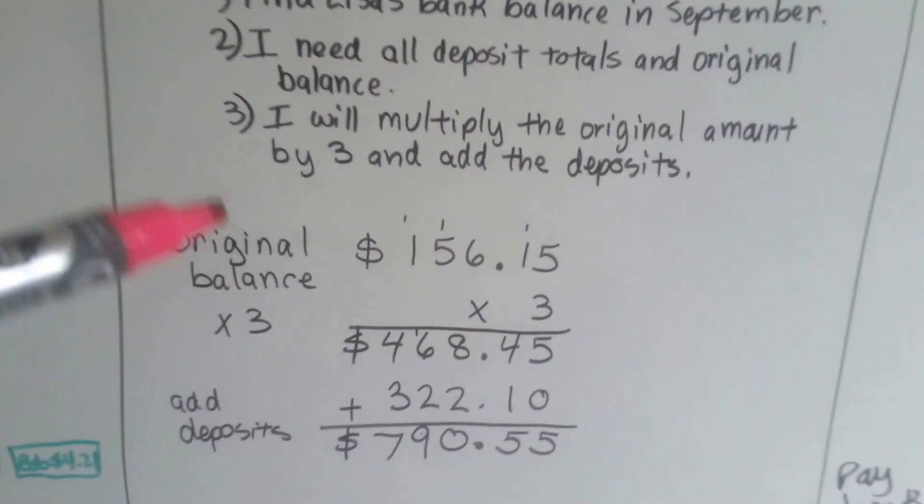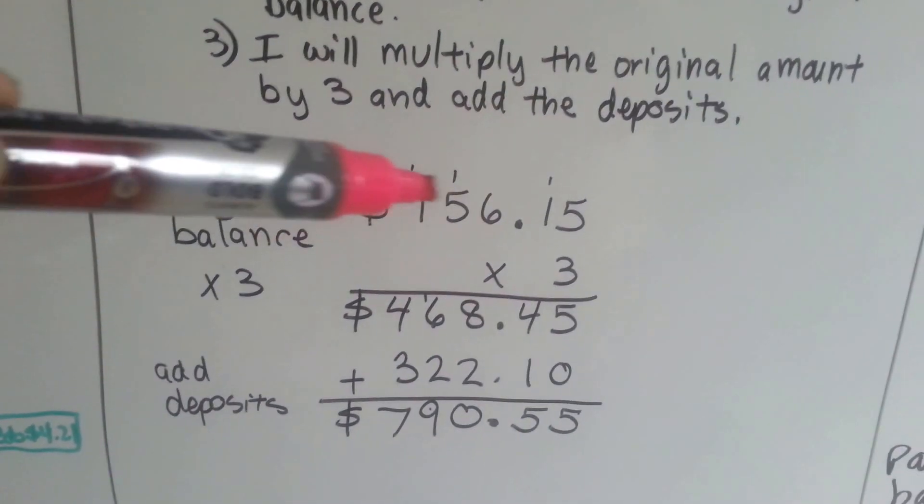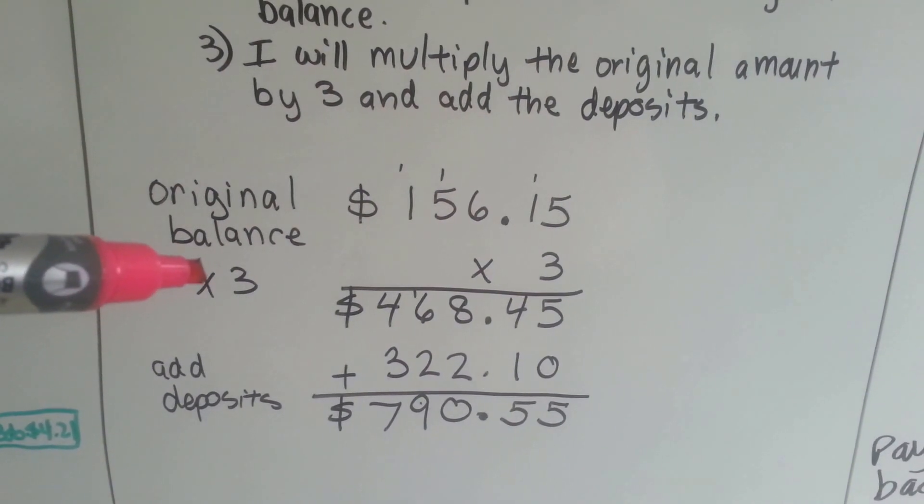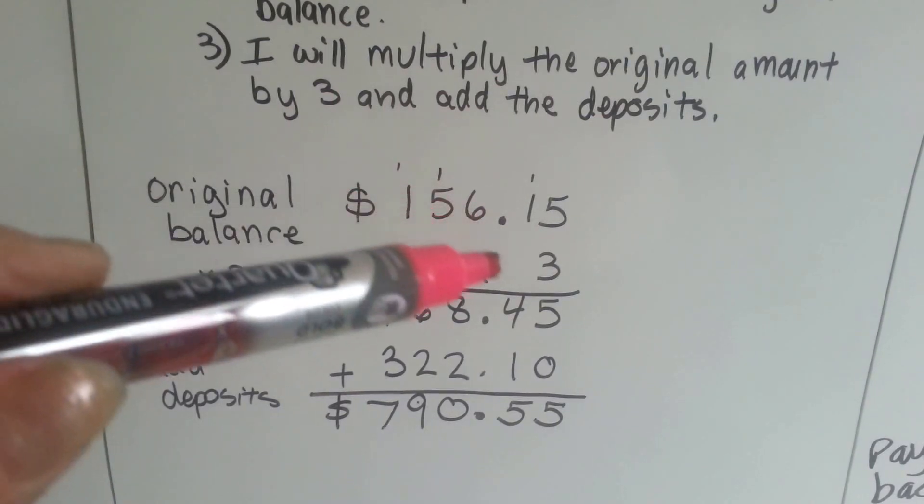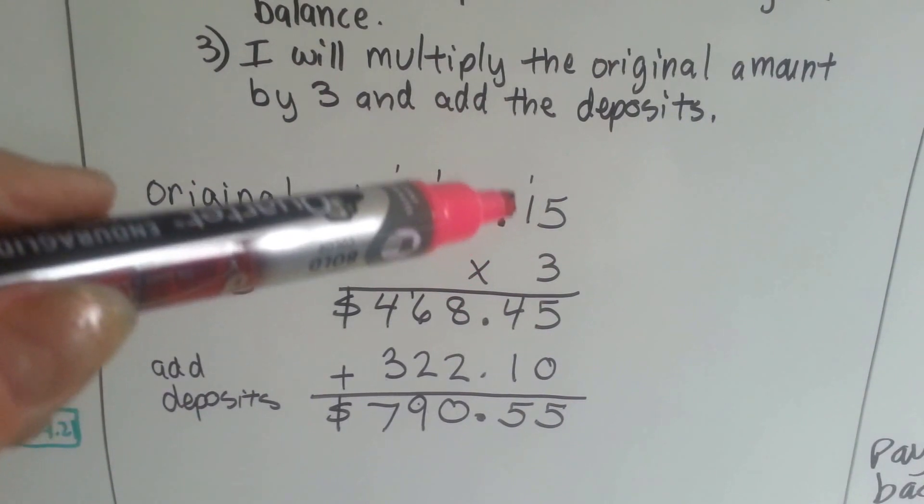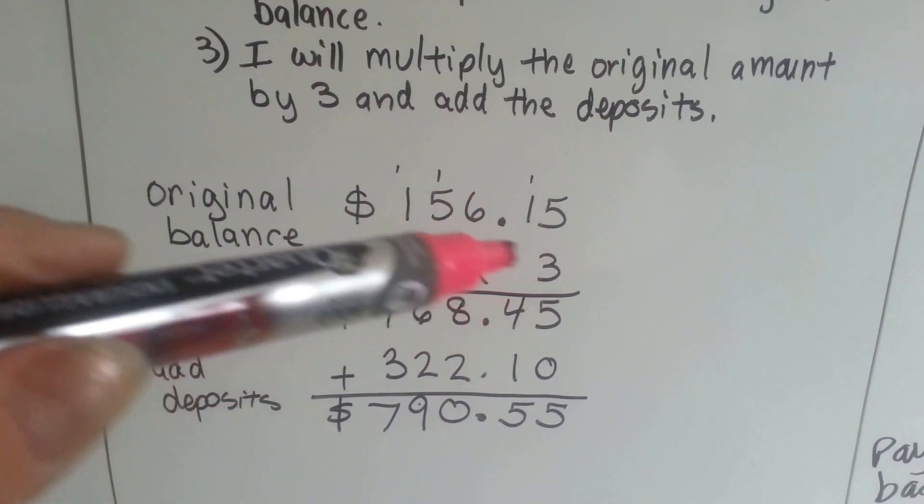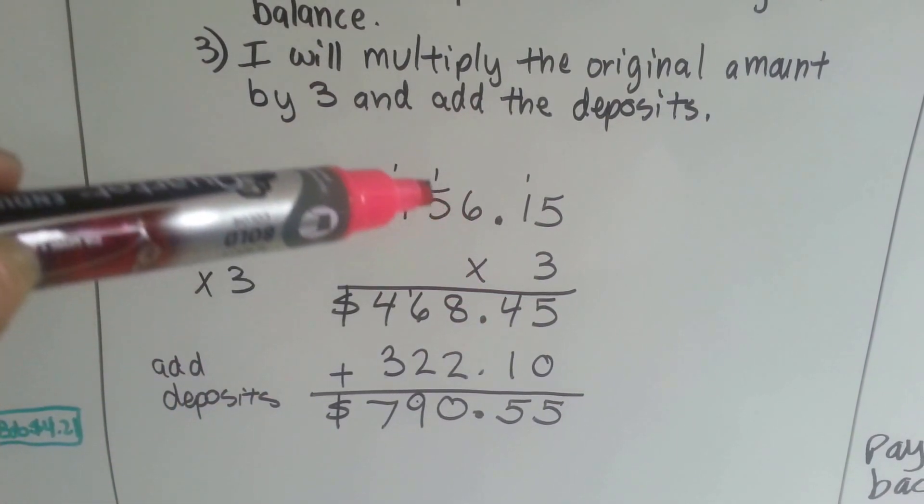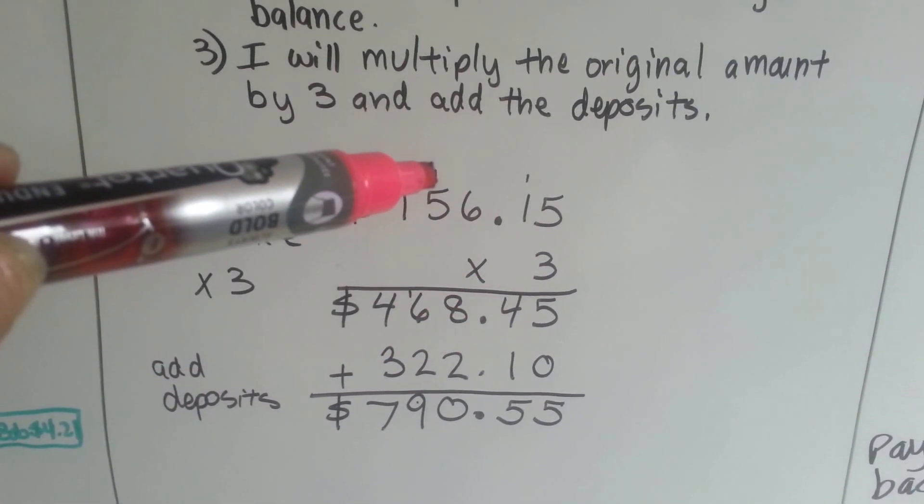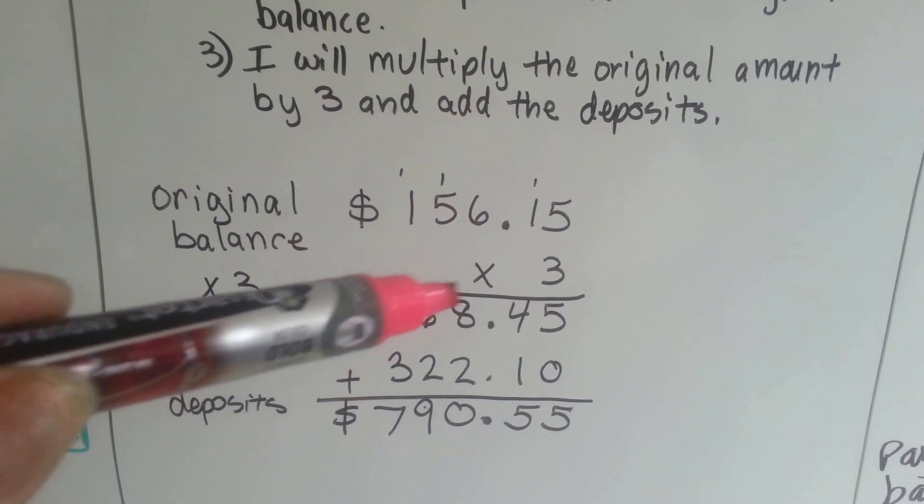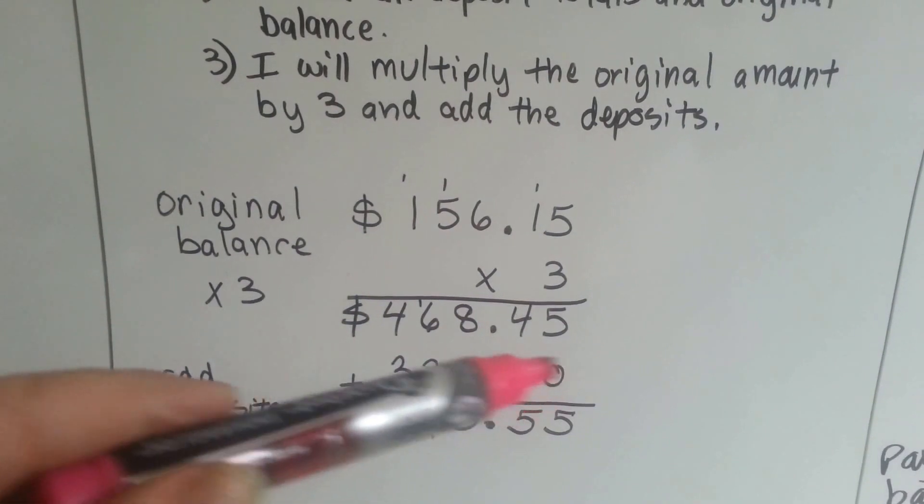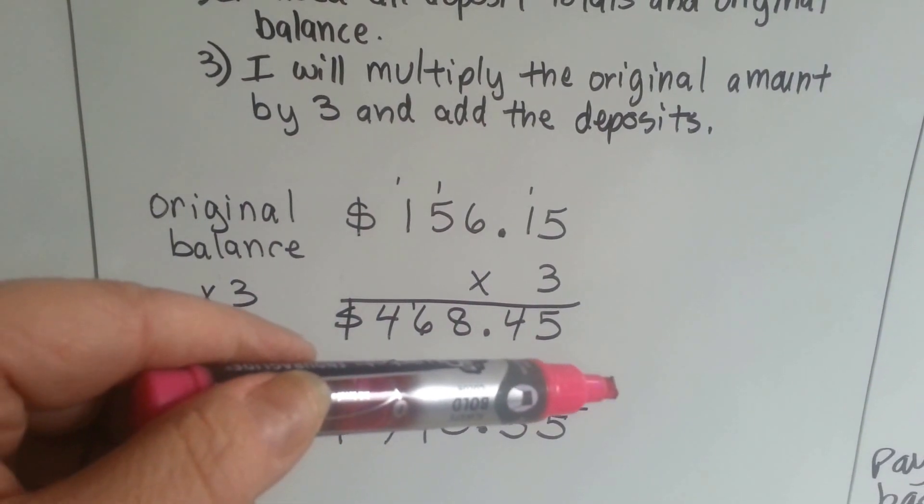Her original balance was $156.15. By June, she saved three times that. So we multiply this by three. Three times five is fifteen. We carry the one and put the five down. Three times one is three plus one is four. Three times six is eighteen. We carry the one and put the eight down. Three times five is fifteen plus the one is sixteen. We carry the one and put the six down. And three times one is three plus one is four. So we know that by June she had $468.45.